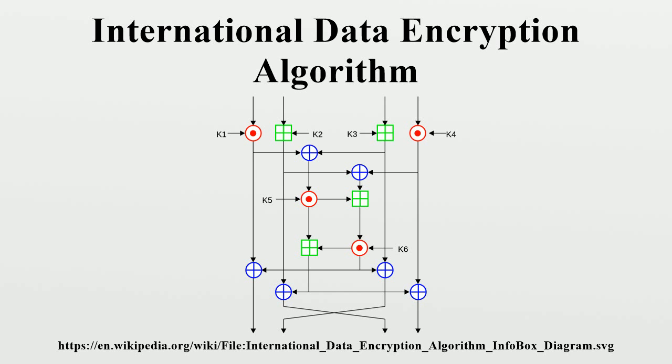Each round uses six 16-bit sub-keys, while the half-round uses four, a total of 52 for 8.5 rounds. The first eight sub-keys are extracted directly from the key, with K1 from the first round being the lower 16 bits. Further groups of eight keys are created by rotating the main key left 25 bits between each group of eight. This means that it is rotated less than once per round on average, for a total of six rotations.